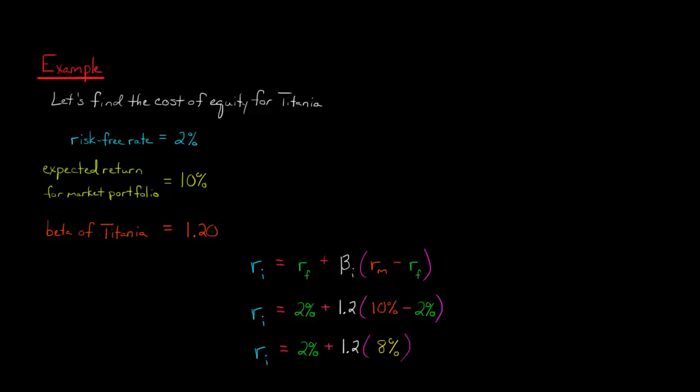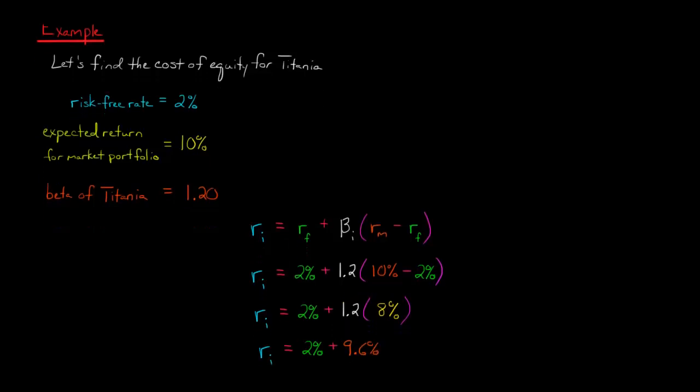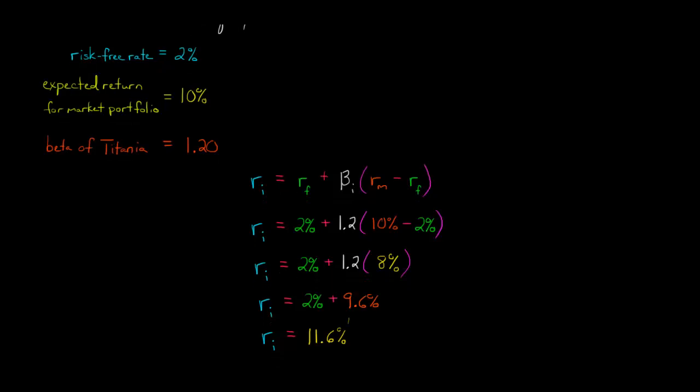Now we multiply that by the beta of Titania, because Titania does not have a beta of 1. It just doesn't move exactly with the market. So it has more risk, because it has a higher beta than 1. It's 1.2. So we multiply the 8% market premium times the beta of the stock, which is 1.2, and that gives us 9.6%. And then we add to that the risk-free rate. So that gives us 11.6%, and that is the expected rate of return for Titania. If we're looking about Titania stock, which is the cost of equity capital.